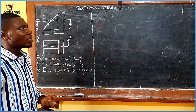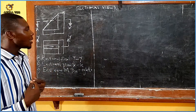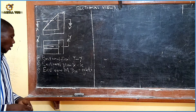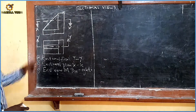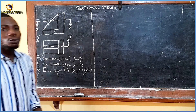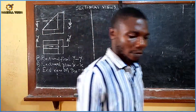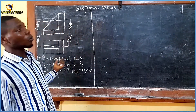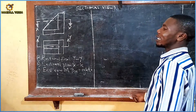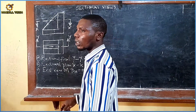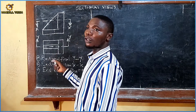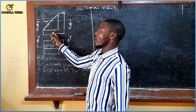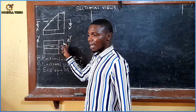Looking at this problem on the screen, just to clarify things - if we are to produce this object pictorially, isometrically, this is what we will be having. Considering the front view and the end view, based on my explanation on previous topics on how to convert orthographic to isometric, this area is my front, this area is my back. These are the front views from the plan, and these are the back from the plan.